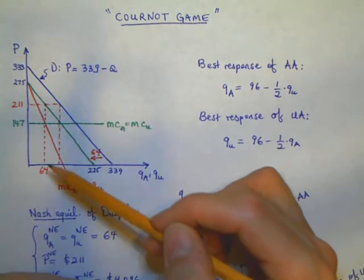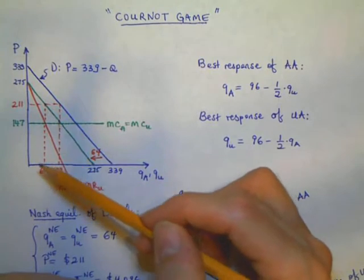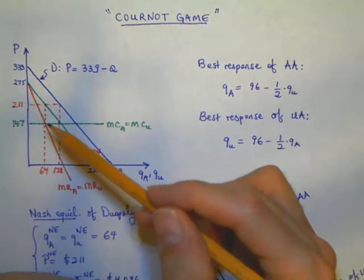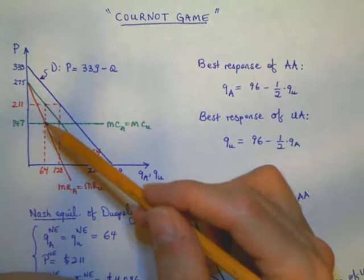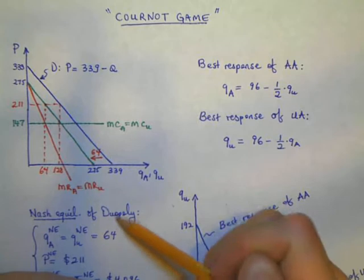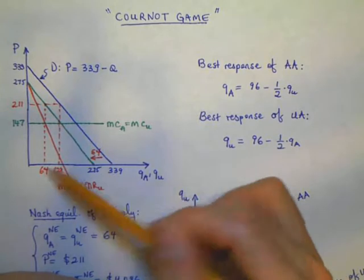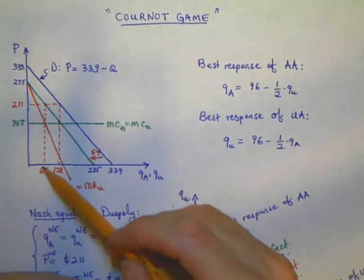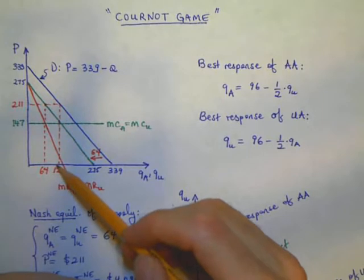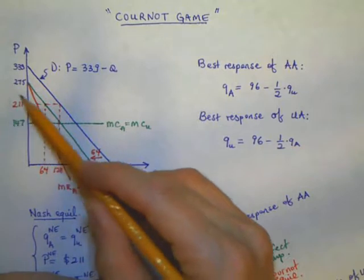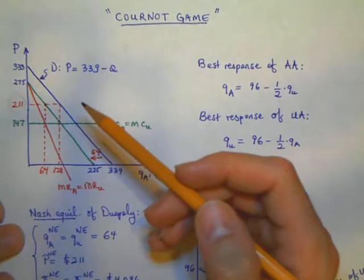At the intersection point, we call this the Nash equilibrium. This is where our best response curves, given by these equations, are solved together. We find q = 64 is our Nash equilibrium. Drawing this nice picture, we can see what's going on. When both firms are producing 64 each, we have both firms producing 128 total and the market price will be $211.